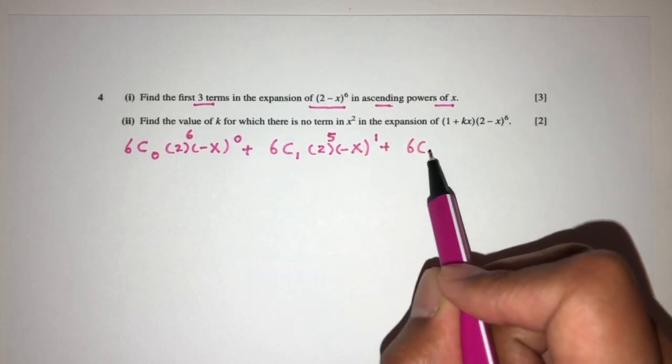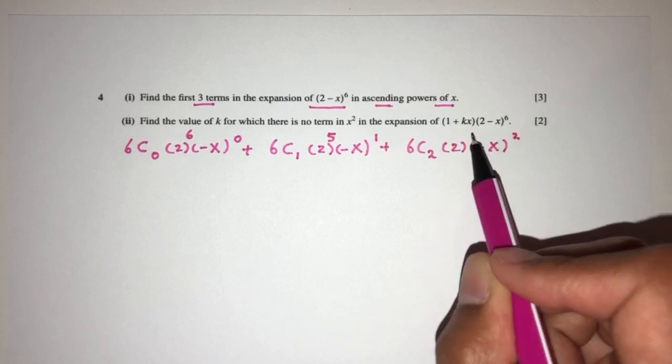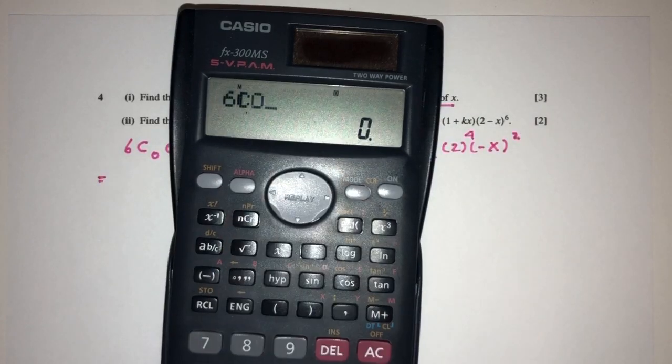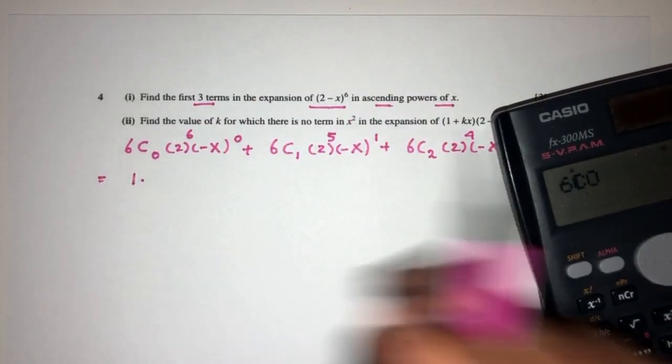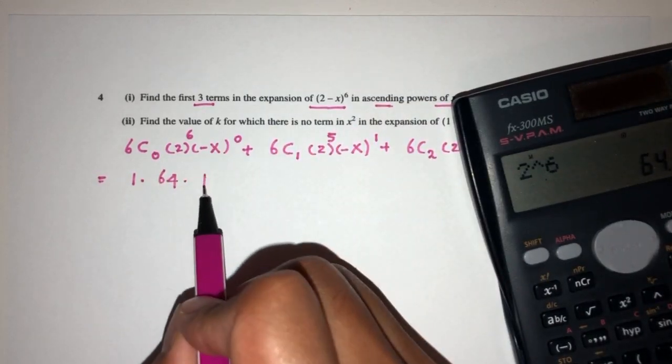And then third term, 6 choose 2. That'll have 2 here minus 1. That'll be 2 and 4 here. So let's see what do we have. 6 choose 0 is 1. That'll be 1 times 2 power 6 will be 64. And this will be 1.